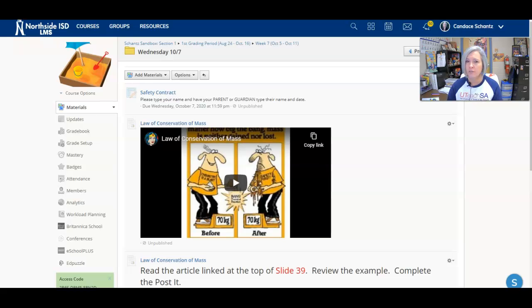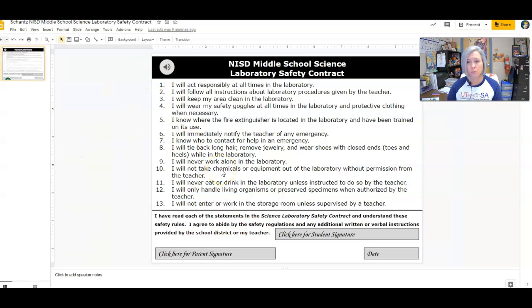If you look in the Wednesday folder, you're going to see a few things. The first thing you're going to see is the safety contract. I know some of you are still from home, but I do have some people on campus that might be using lab equipment. So I do need to get your safety contract signed for when you do come back. We're doing it a little differently this year. It's an electronic version.